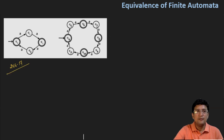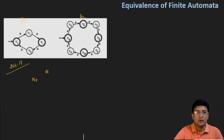We have to verify if automata one and automata two are equivalent or not. The first thing that needs to be verified is whether the initial state is the final state in both automata. In the first automata, Q0 is the final state, and in the second automata, Q4 is also the final state. So the initial state is the final state in both automata, which means we can go ahead.